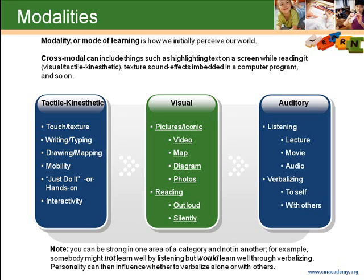Learning options need to be made available so students can at least start off learning something, especially something new, in a way that matches their preferred mode of learning. This reduces frustration and increases likelihood of success. Note that you can be strong in one area of a category and not in another. For example, somebody might not learn well by listening, but would learn well through verbalizing. Personality can then influence whether to verbalize online or with others.